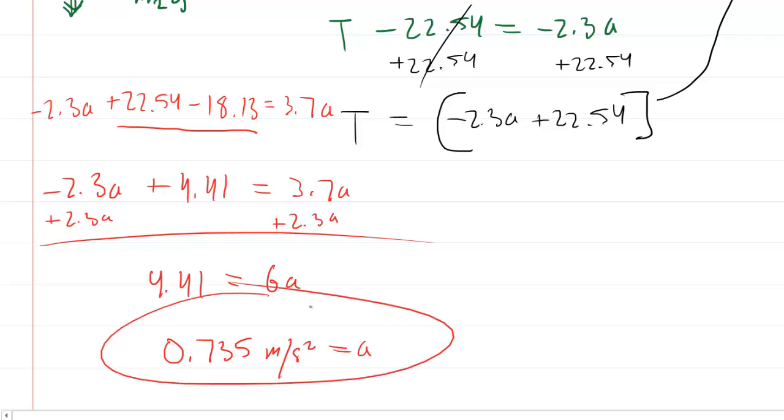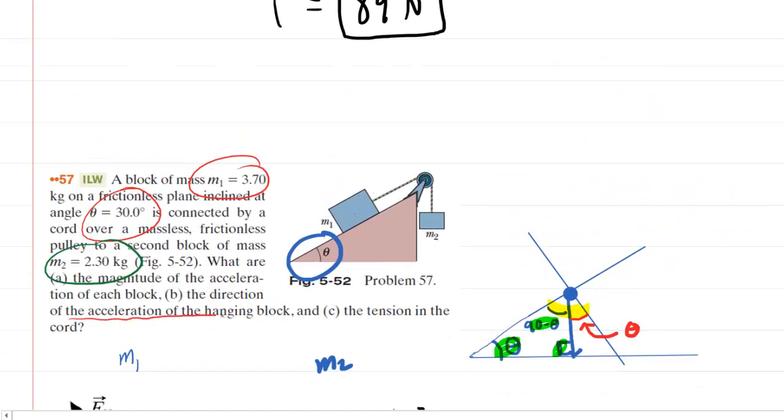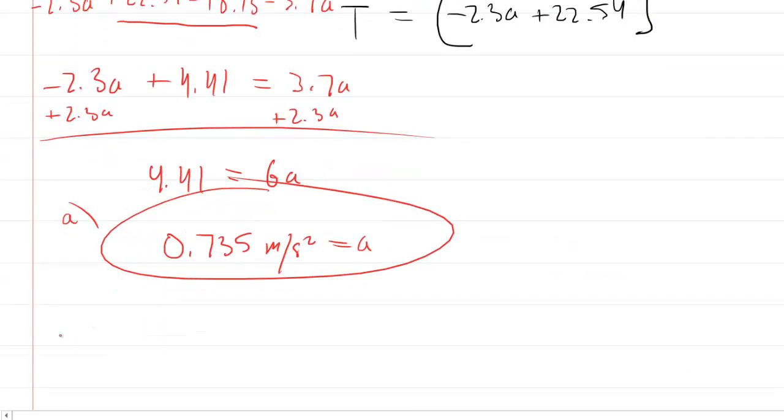And you'll see that the acceleration is 0.735 meters per second squared. So this would be the correct answer to part A of the question. It also wanted to know the direction of the acceleration of the hanging block. Well, we've already concluded that that would be downward or in the negative y direction if you prefer. So the answer for B is either downward or you could also say negative y direction.